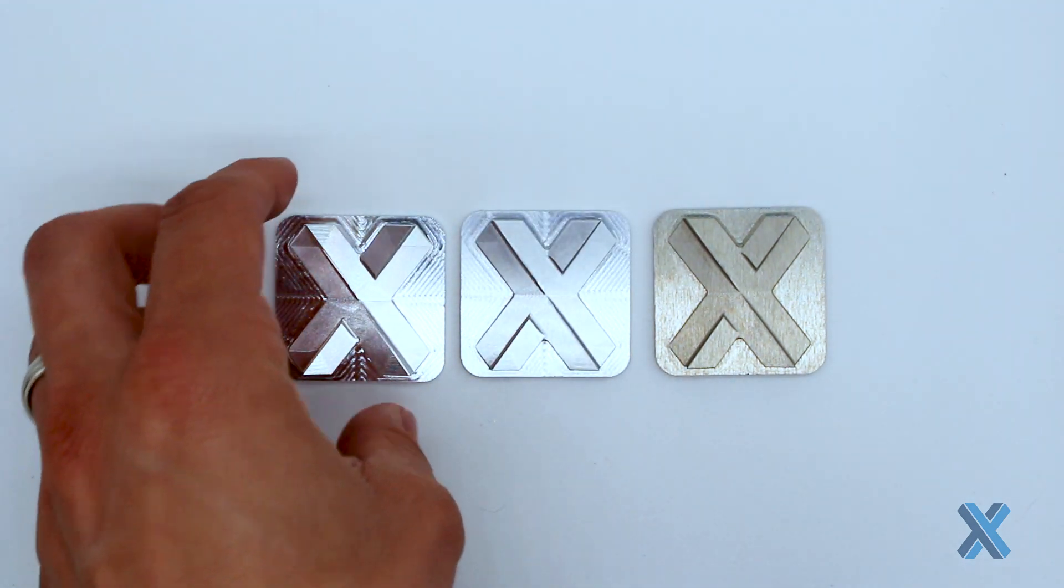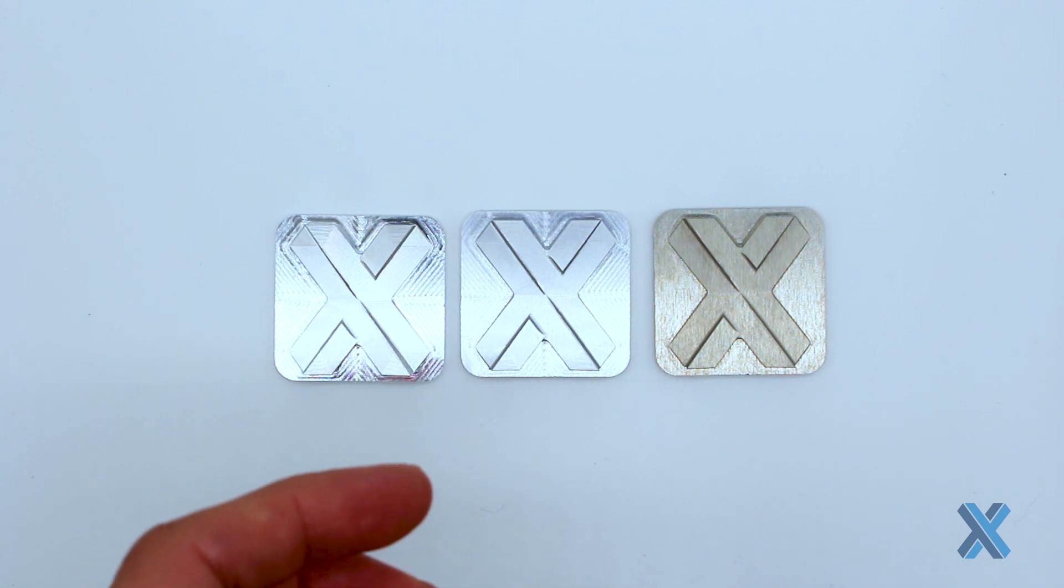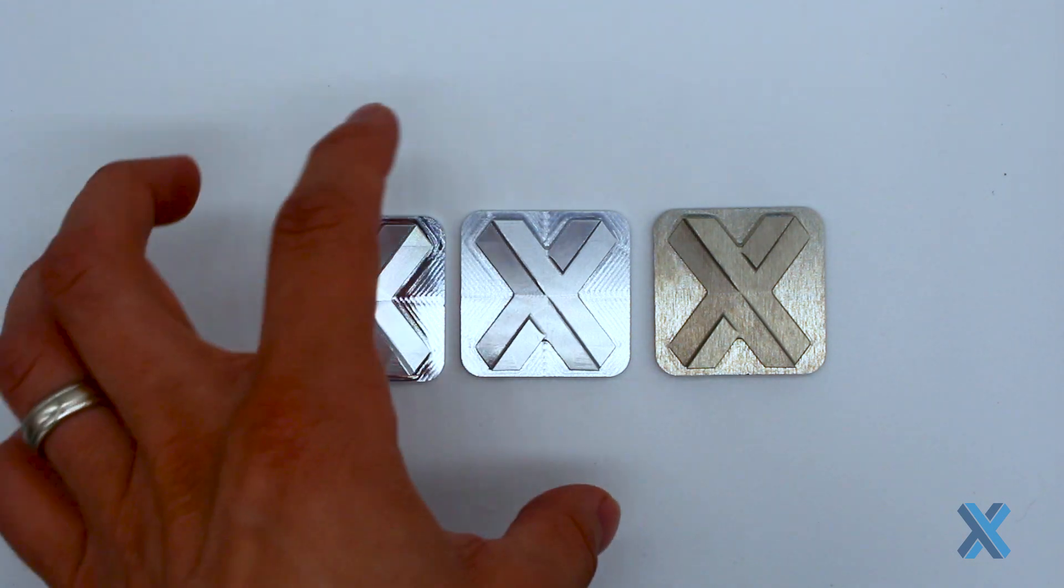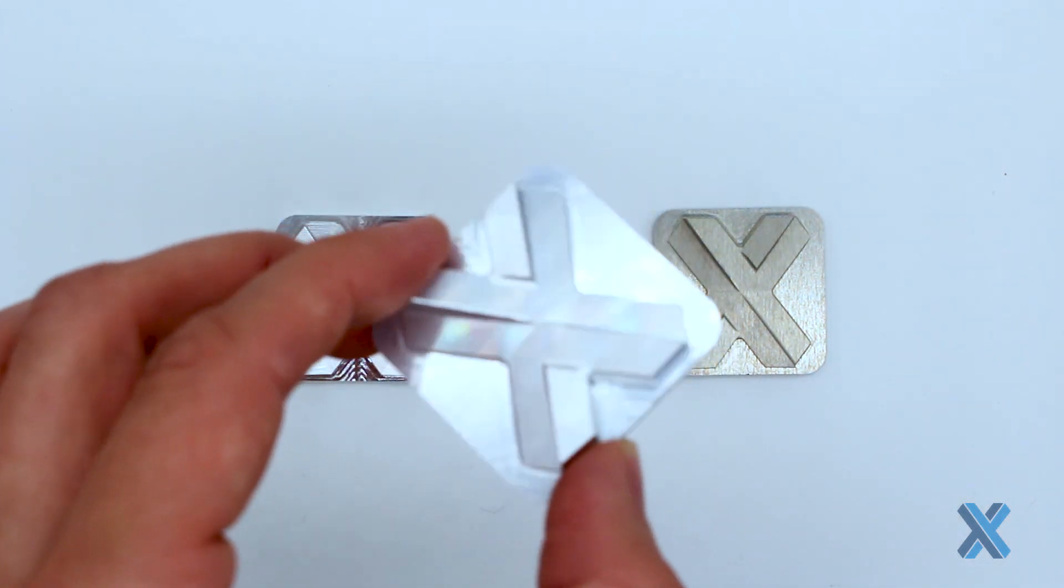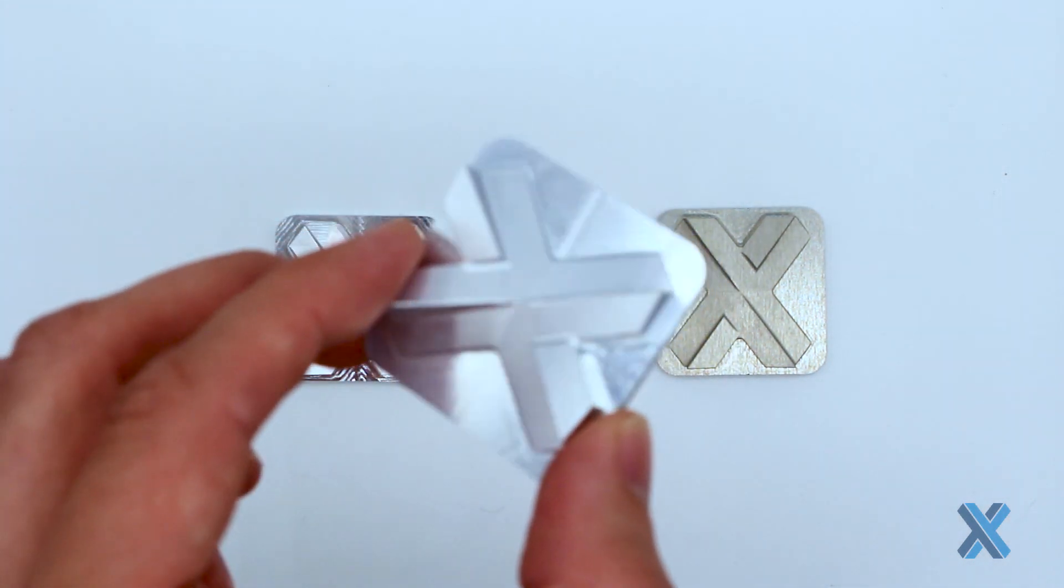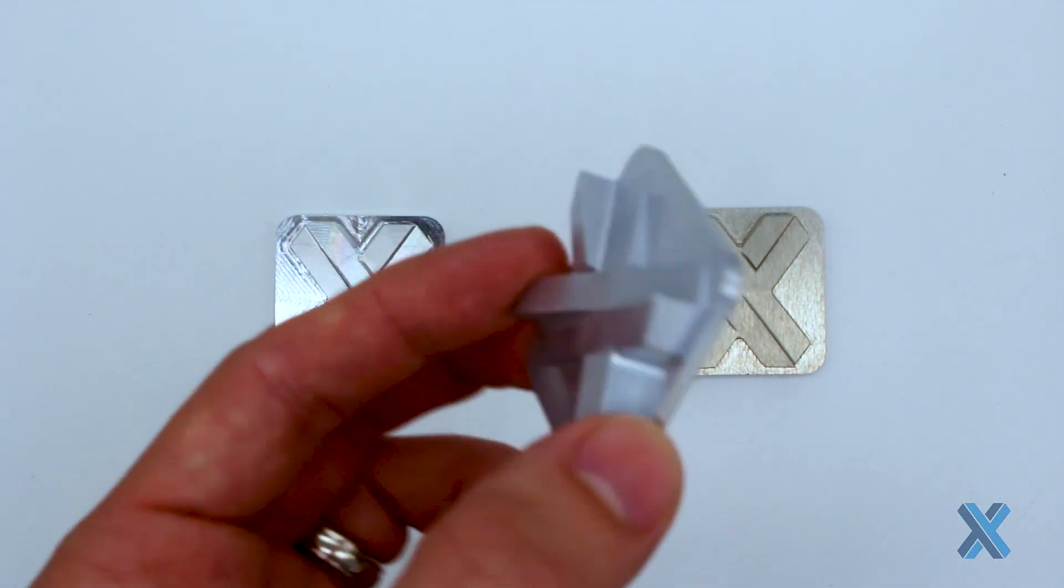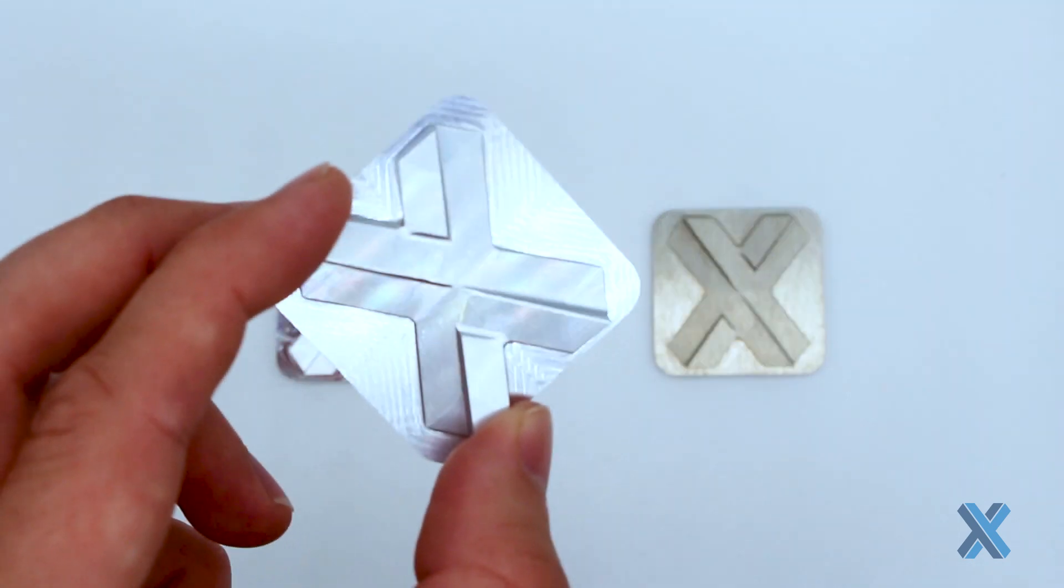When you ask for a chemical conversion coating—let's say we talk about a Type 2 Class 1A clear chromate—there's actually going to be a reduction in the sheen of that part. So again, this is the same tile with a Type 2 Class 1 clear chromate.